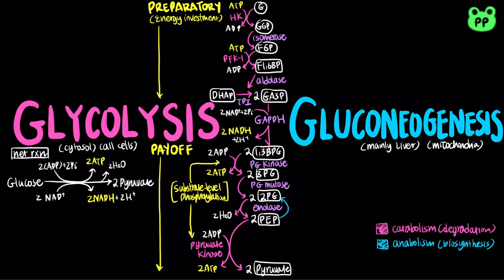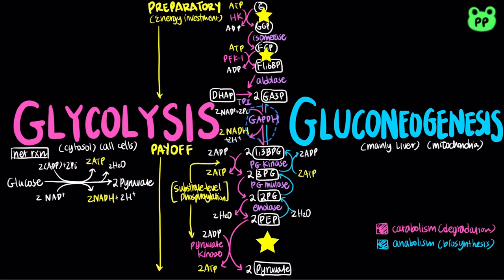Gluconeogenesis and glycolysis share 7 steps, which are all reversible. However, the 3 irreversible steps cannot be used in gluconeogenesis — they need to be bypassed by a separate set of enzymes.